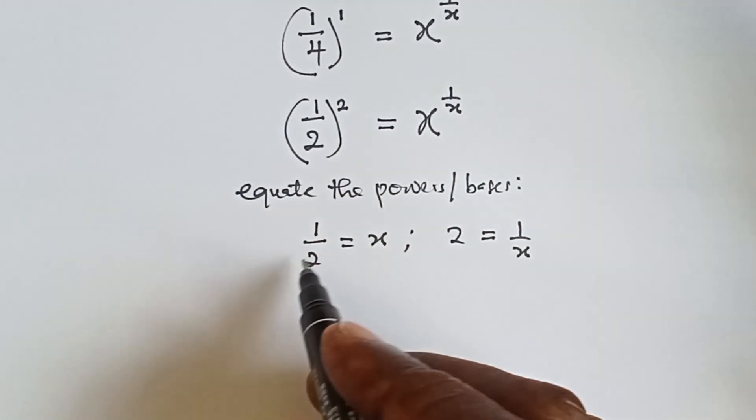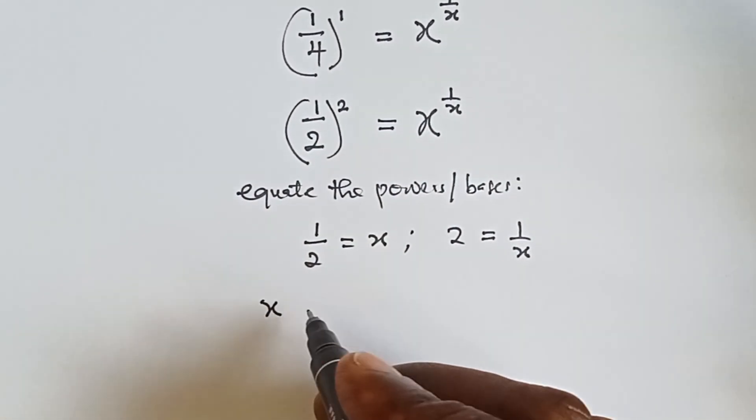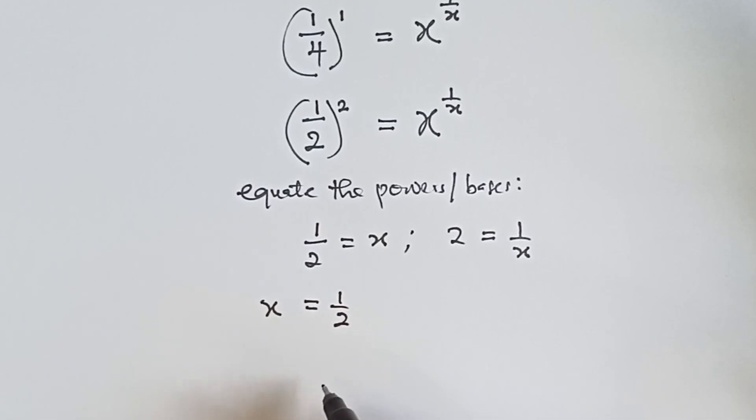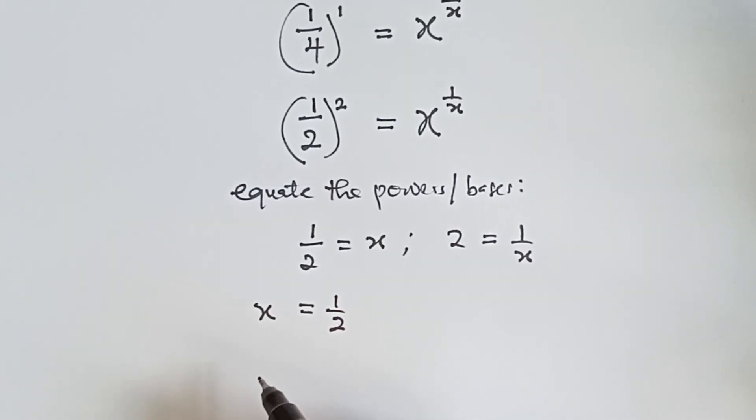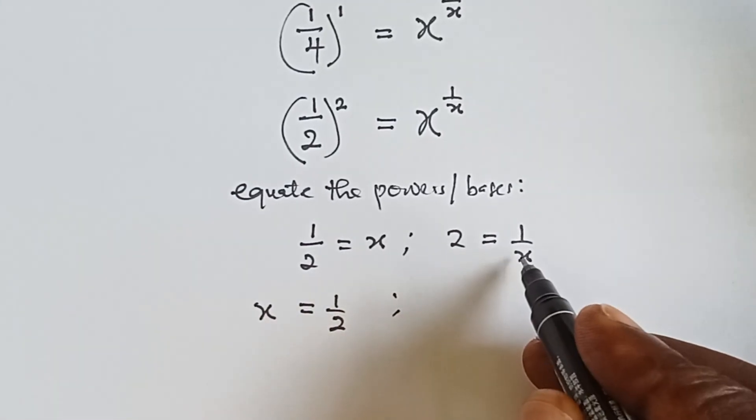Alright, so from the first equation we can say that x is equals to 1 over 2. Alright, that is settled.